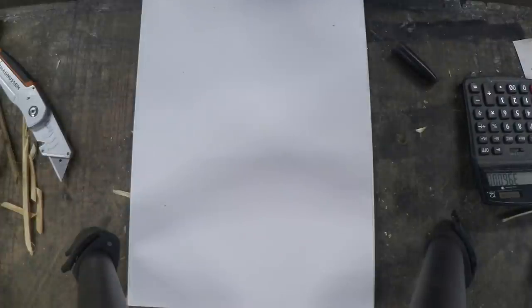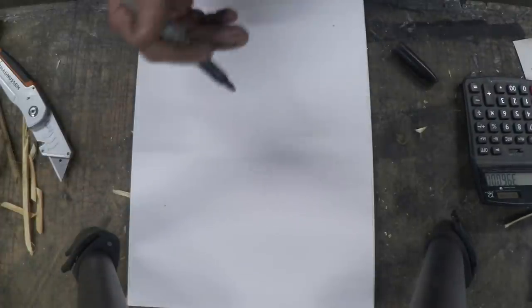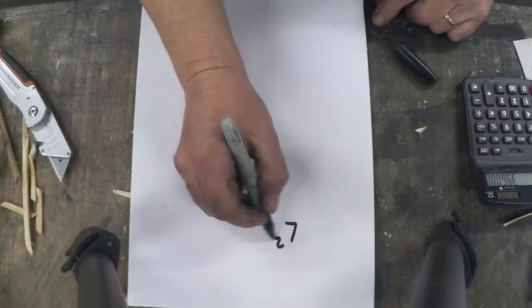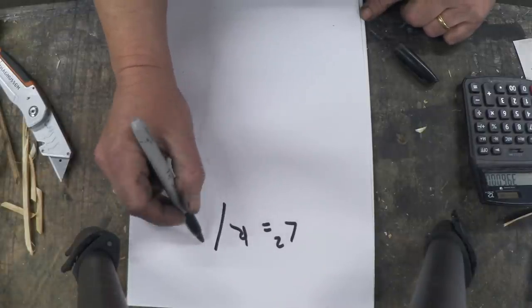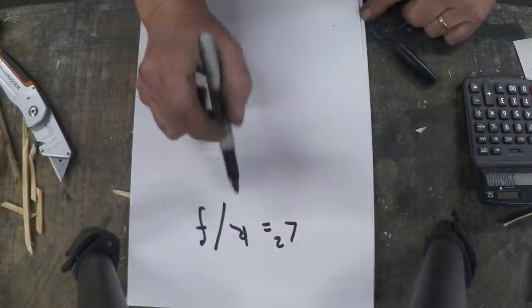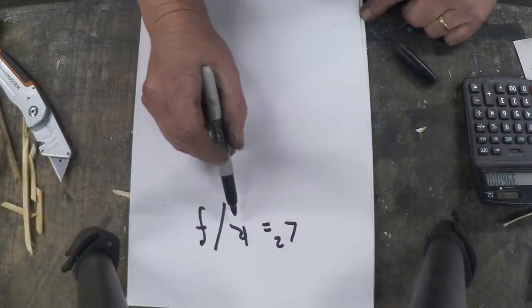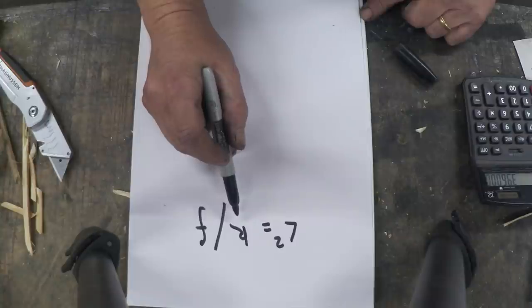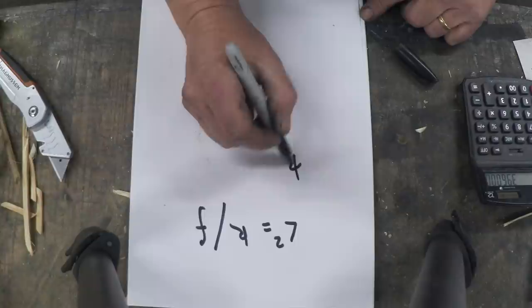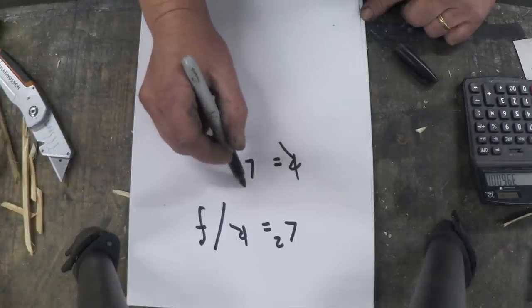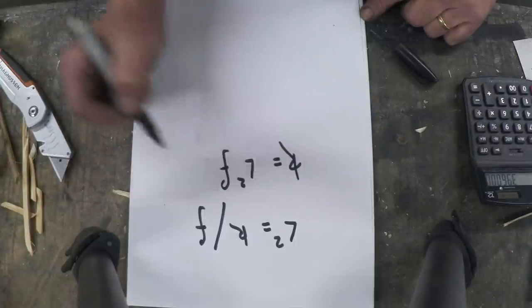So just to go through that one more time, the formula you need is L squared is equal to k divided by the frequency. That k value you work out. So you get your piece of material and you work out the k value. You work out the k value because k is equal to L squared times the frequency.